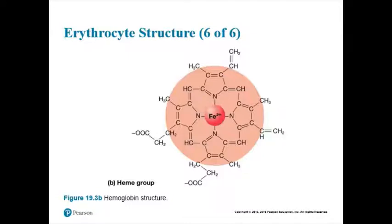Your red blood cells also carry a little bit of carbon dioxide — not that much, just a little. It's really the hemoglobin carrying the carbon dioxide inside the red blood cell. When hemoglobin binds to carbon dioxide, you get a product called carbaminohemoglobin — just your hemoglobin when it binds to carbon dioxide. There are other gases that could bind to hemoglobin, like carbon monoxide.